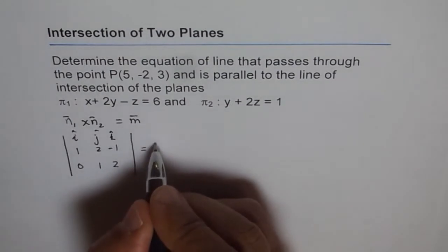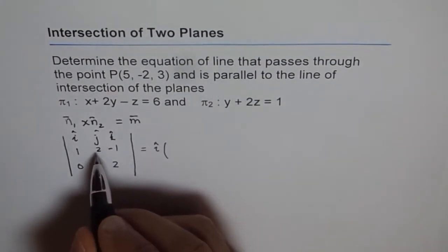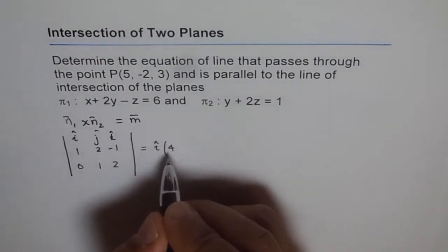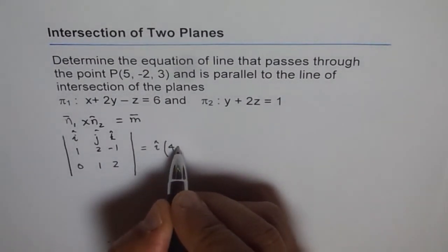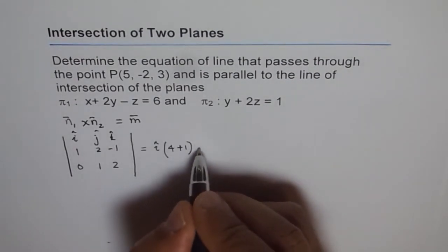So we get i and this gives us 2 times 2 is 4, minus this gives me plus 1, minus j.